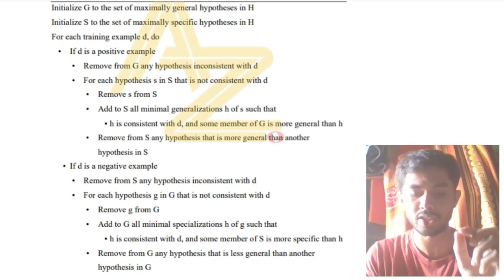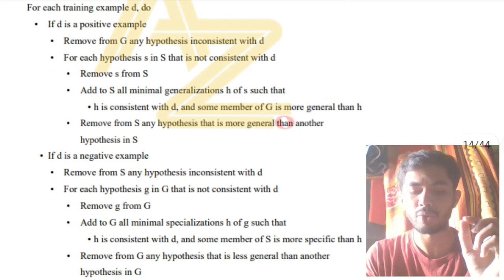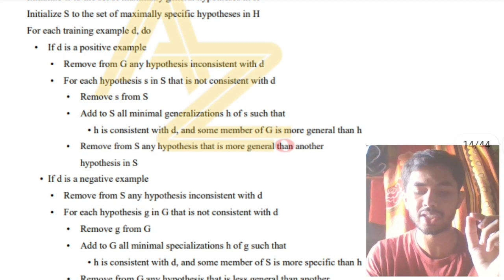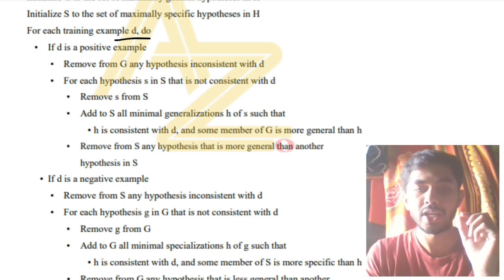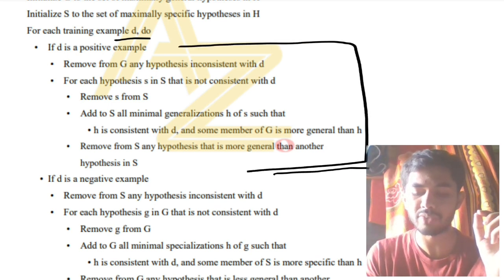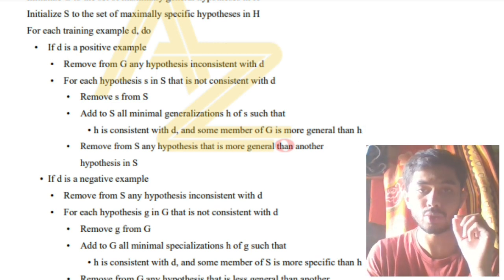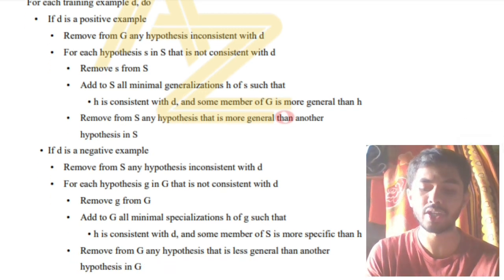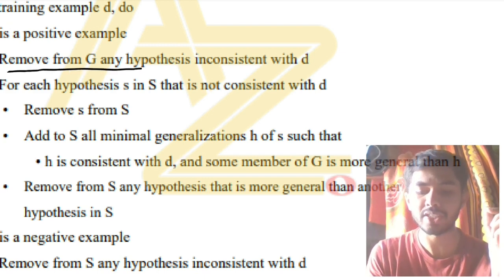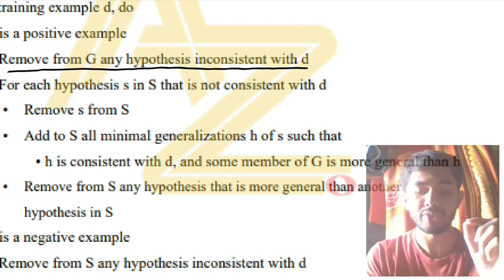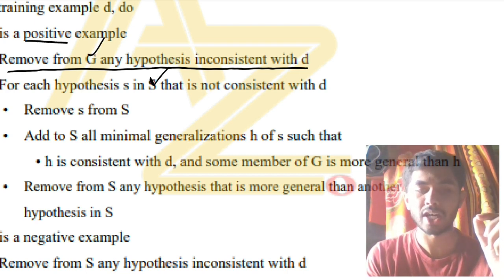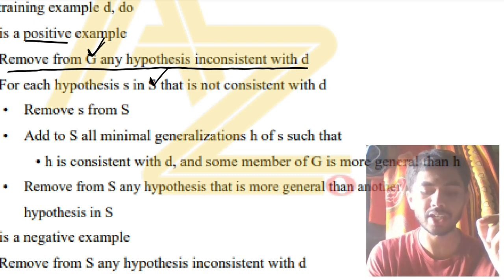For the algorithm: first initialize G and S, then consider each training example d. Each example will either be a positive example or a negative example. If positive, you first consider G then S. If negative, you consider S first then G. For a positive example: first remove from G any hypothesis that is inconsistent with d, then remove from S any hypothesis not consistent with d.